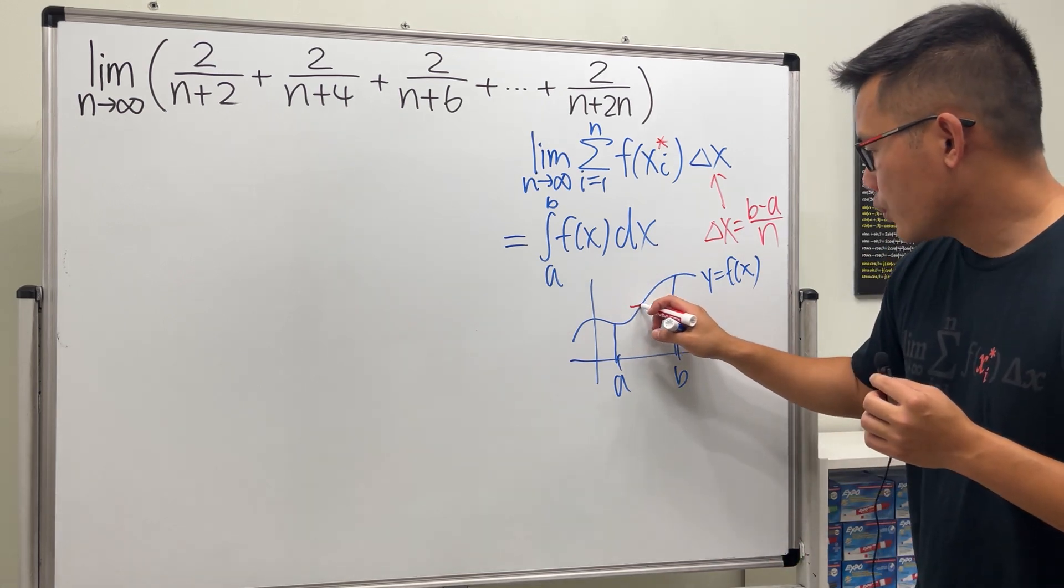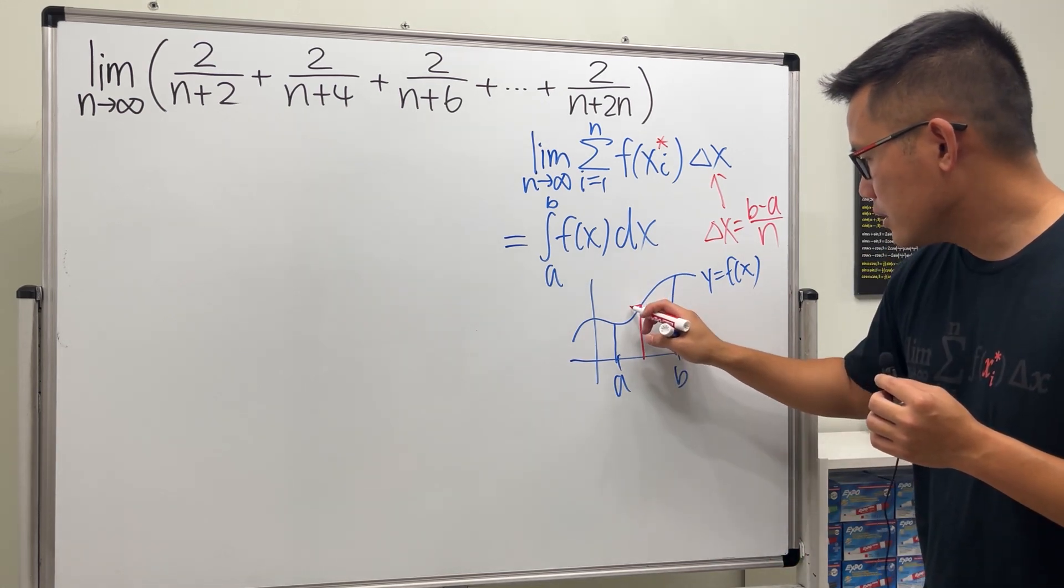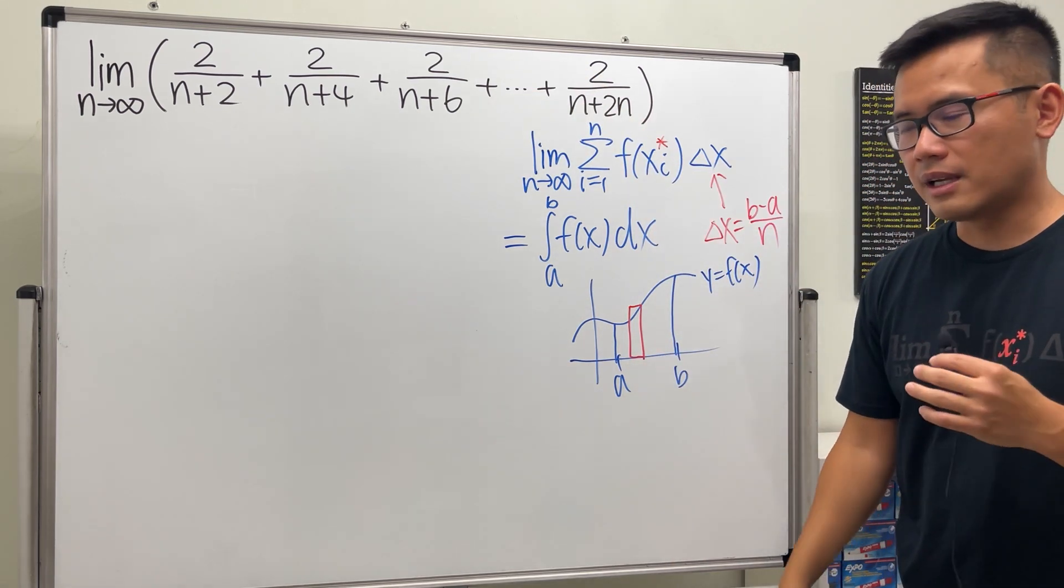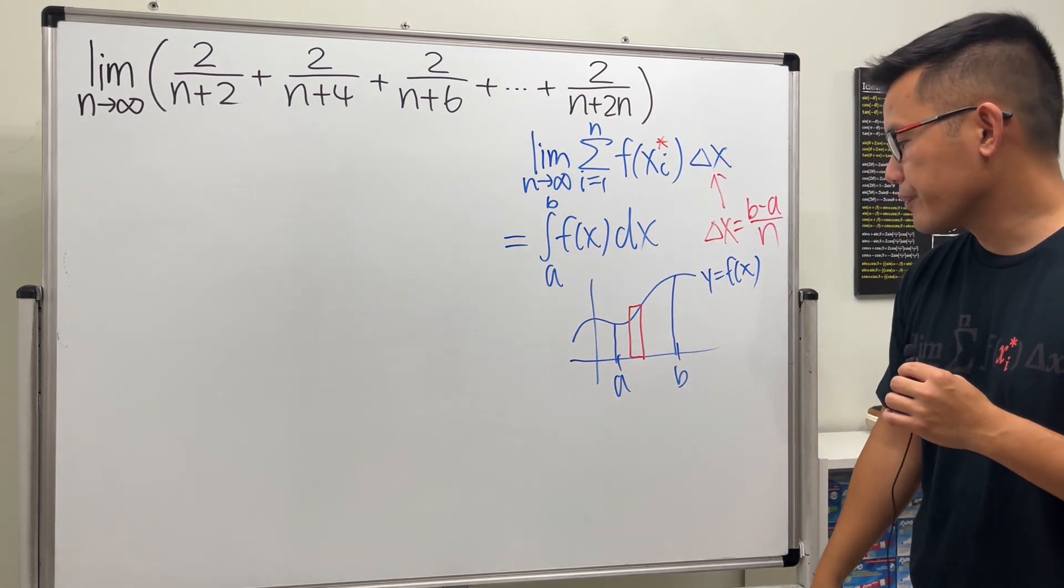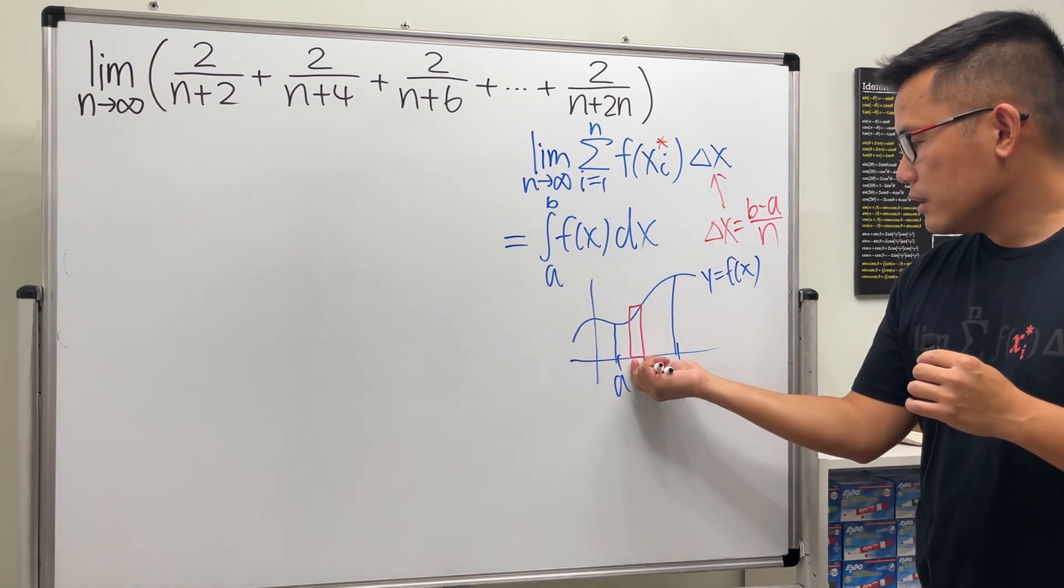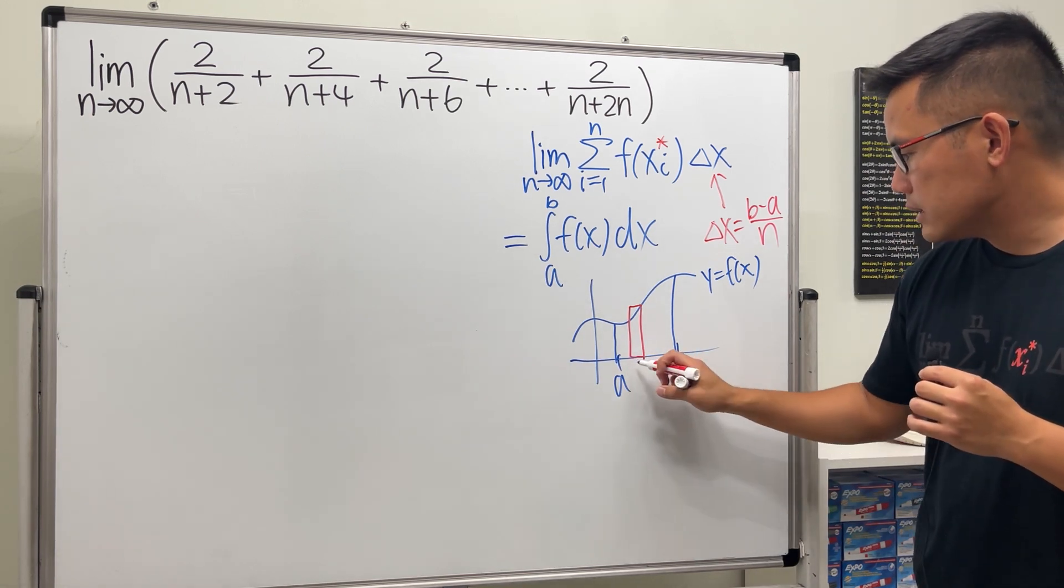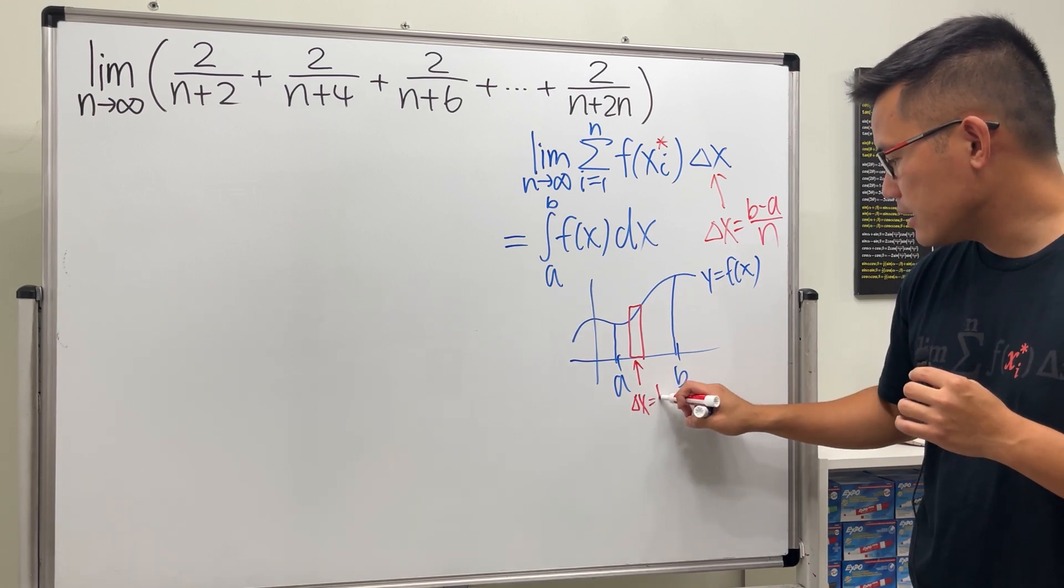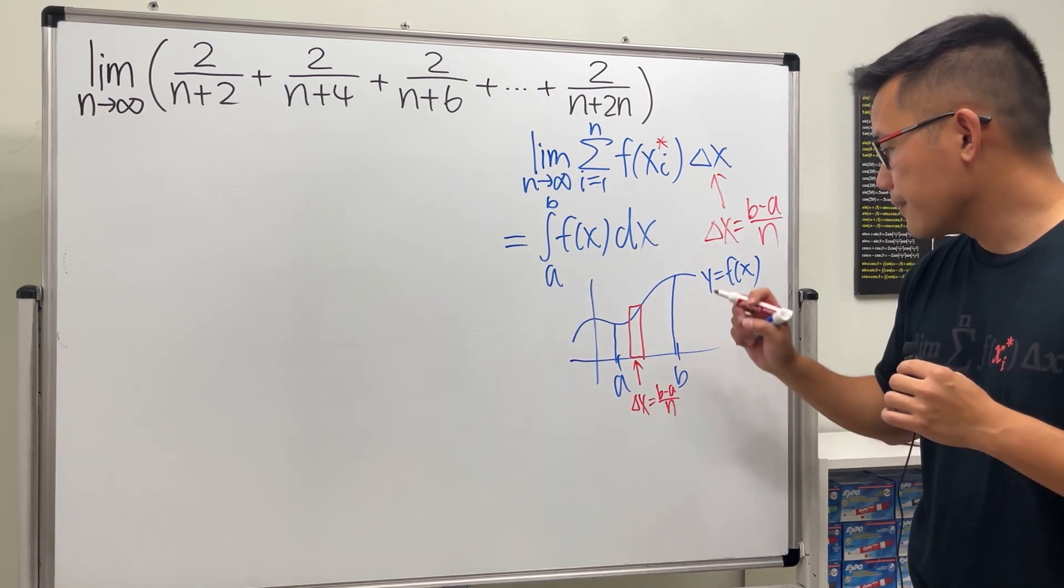As I said earlier, we can use the right endpoint. Most of the time, these kind of questions are based on the right endpoint rectangle like so. So this right here, the width, which is exactly the delta x, and that's exactly b minus a over n.